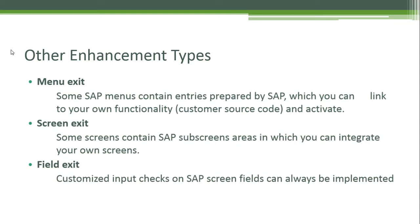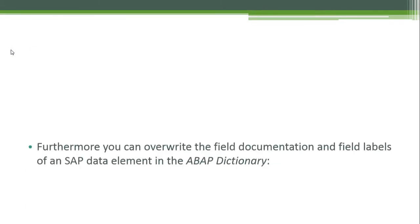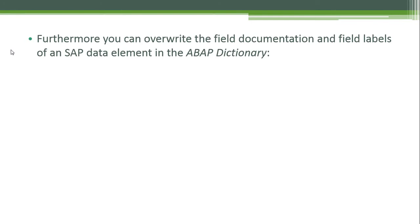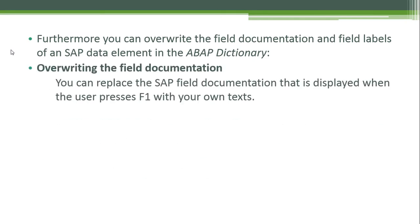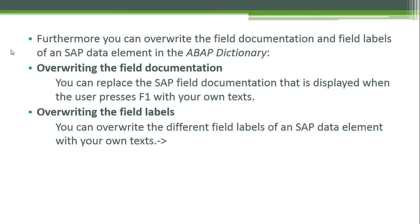We also have field exits. Customized input checks on SAP screen fields can always be implemented without modifications by means of a field exit — this does not require any preparation by SAP. Furthermore, you can override the field documentation and field labels of a SAP data element in the ABAP dictionary. You can replace the SAP field documentation displayed when the user presses F1 with your own text, and you can override the different field labels with your own text.